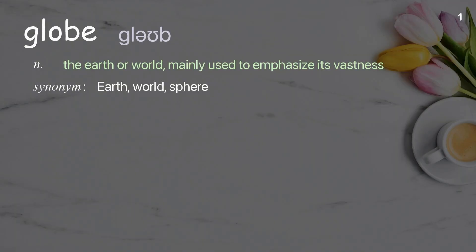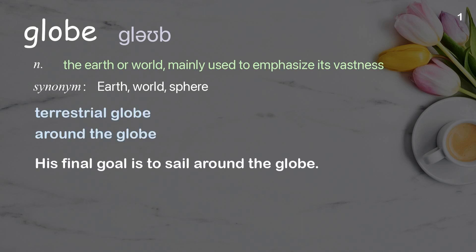Globe: The Earth or world, mainly used to emphasize its vastness. Examples: Terrestrial globe. Around the globe. His final goal is to sail around the globe.